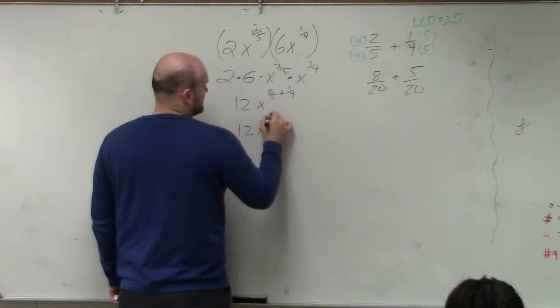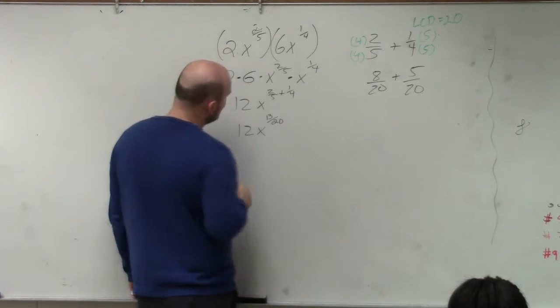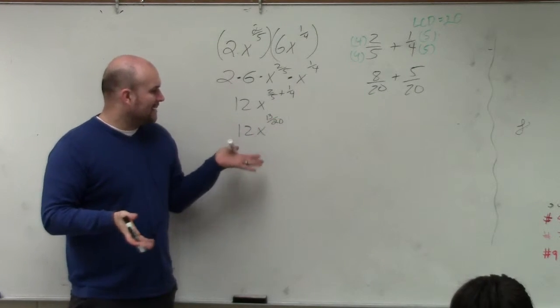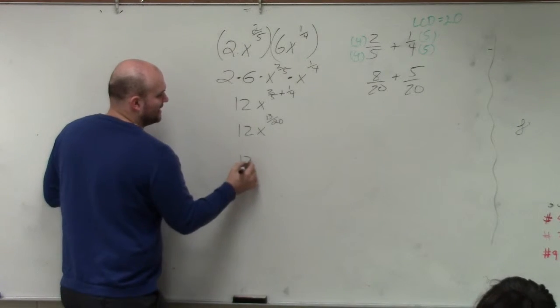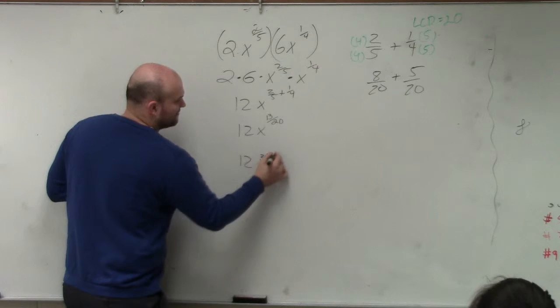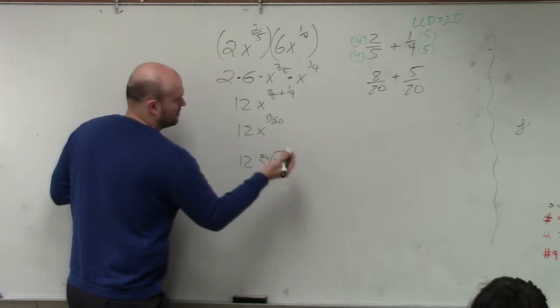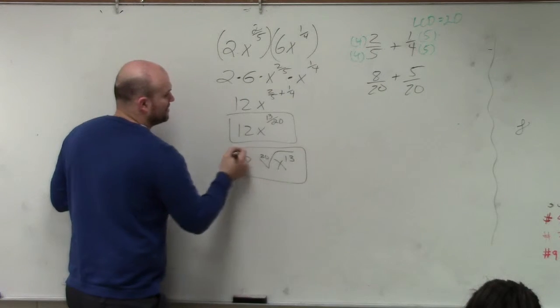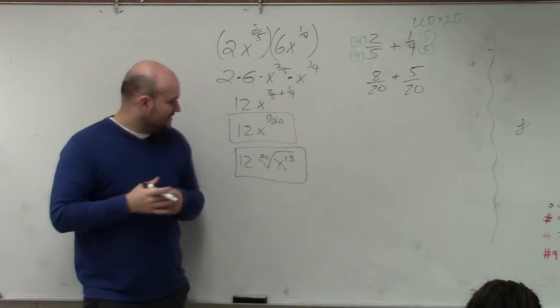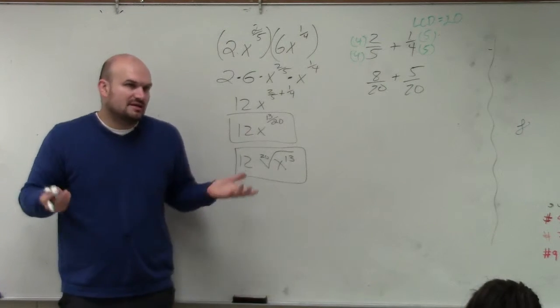That's going to give me 13 over 20, 12x, 13 over 20. I cannot reduce the fraction. I could write it as a radical form if the question asked. But there's really not any other simplified form than these two answers. So it really kind of depends on how they want the answer to be written. But either one of those technically would be simplified.